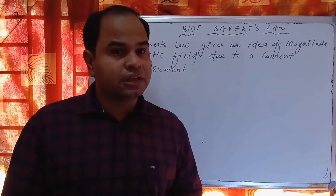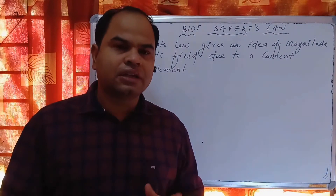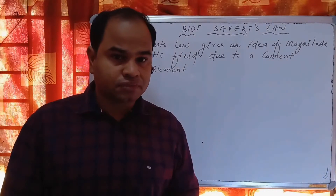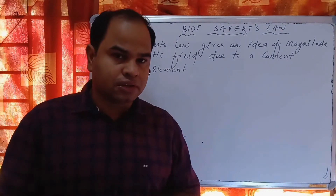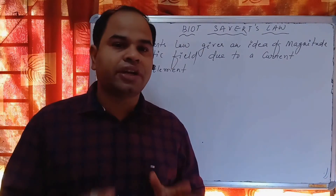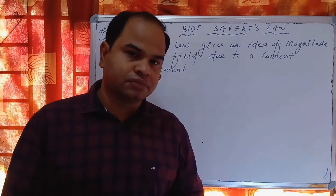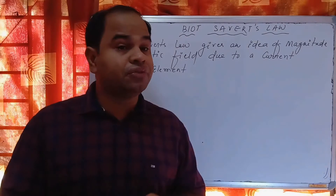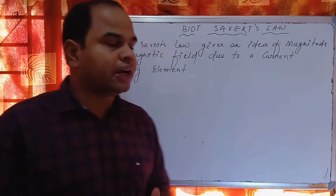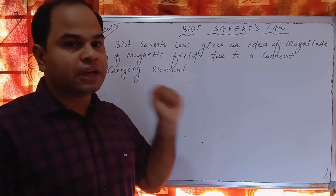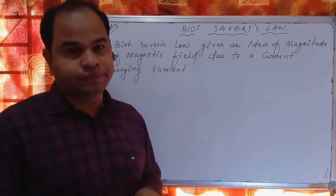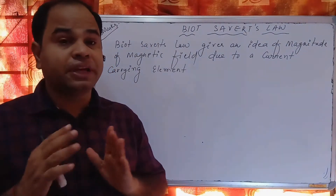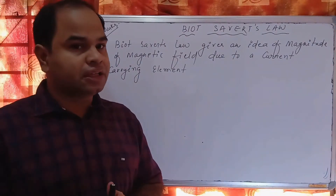The conductor can be of different dimensions — the length and width may be different. So Biot-Savart's law tried to give the formula for the magnitude of magnetic field. He has given the formula for the magnitude of magnetic field produced by a small element of the current-carrying conductor.